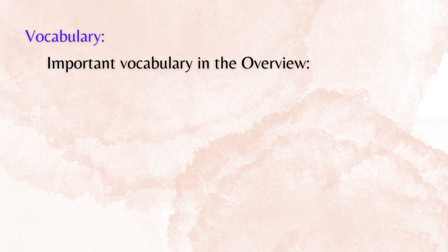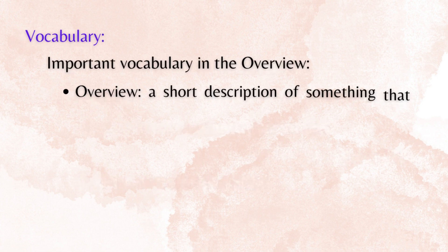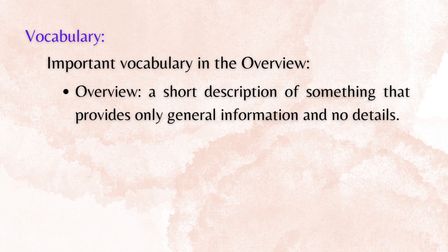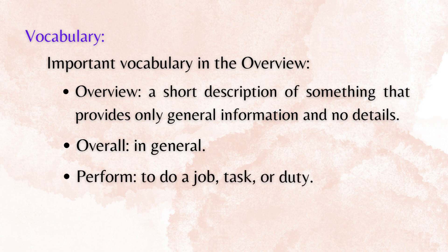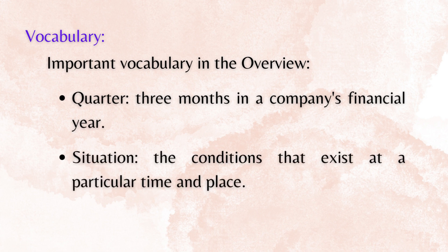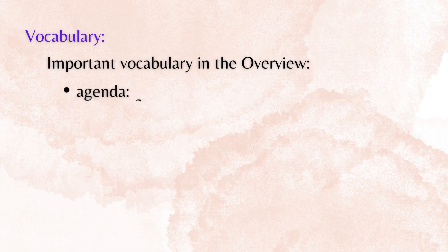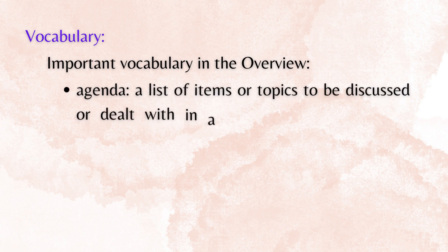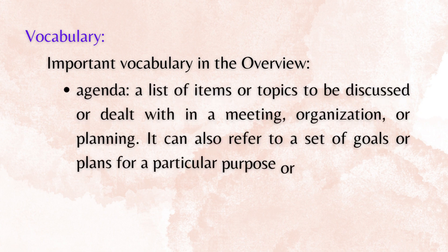Important vocabulary for the overview section: Overview — a short description of something that provides only general information and no details. Overall — in general. Perform — to do a job, task, or duty. Quarter — three months in a company's financial year. Situation — the conditions that exist at a particular time and place. Agenda — a list of items or topics to be discussed or dealt with in a meeting, organization, or planning. It can also refer to a set of goals or plans for a particular purpose or future.